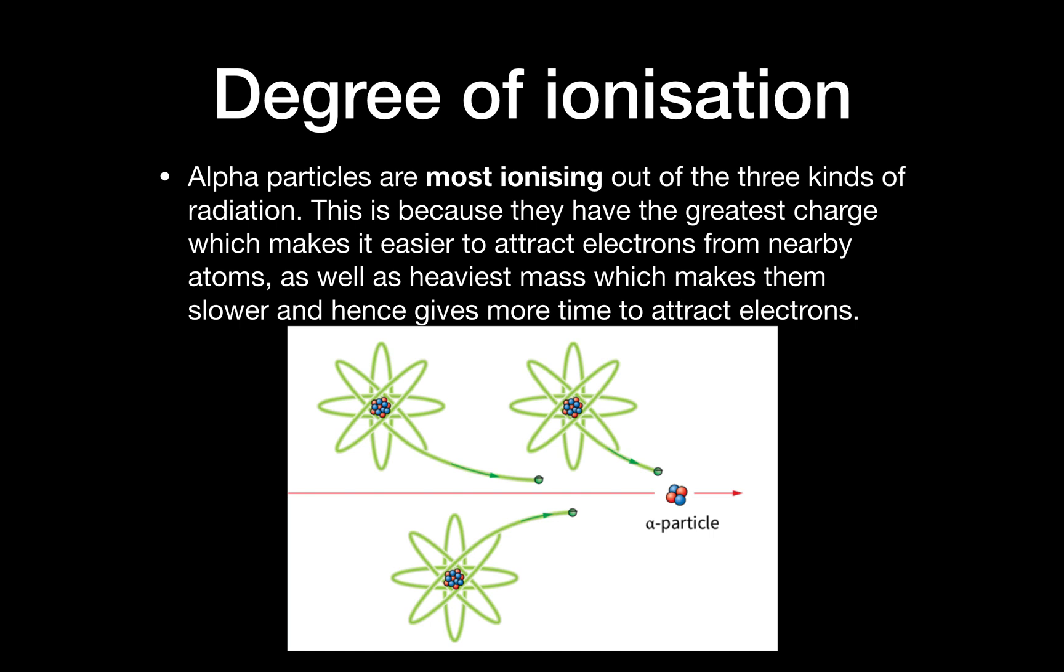Alpha particles are the most ionizing out of all three categories. This is because they're very heavy with the highest mass of 4 atomic units. So they'll be slowest passing through the air, and they also have the highest charge. Highest charge means easier to attract electrons from the air, and slower means more time to attract the electrons. This makes alpha particles most ionizing out of all three.